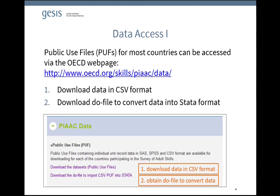In the first step, you need to download the dataset for each country in CSV format and save all files in one folder on your computer. In the second step, you need to download the do file to import the CSV data into Stata and save it on your computer.